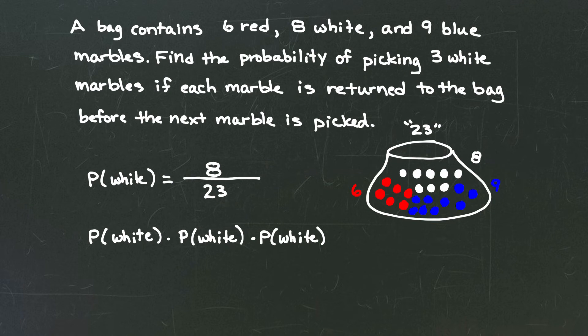Now each time the marble is returned to the bag which sets us up to the exact same scenario we start with. So the probability of getting a white marble the first time we said was eight out of twenty-three. But once we return that marble back into the bag we're back to square one.